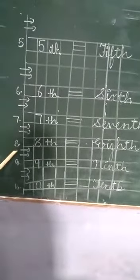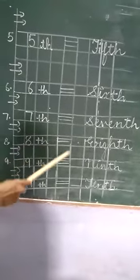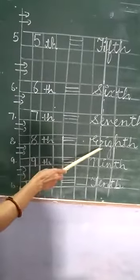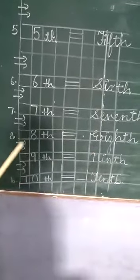Then you write number 8. In ordinal form, we say eighth. And the spelling of eighth is E-I-G-H-T-H. Then again you leave two lines.